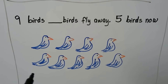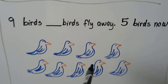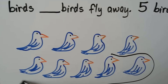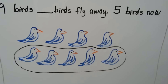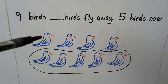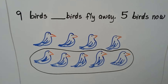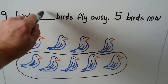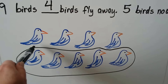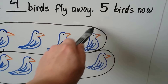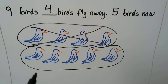So let's circle five birds — one, two, three, four, five. That's how many are supposed to be there now. How many must have flown away? One, two, three, four are outside the circle. If there are nine birds and four birds fly away, there are five birds now.